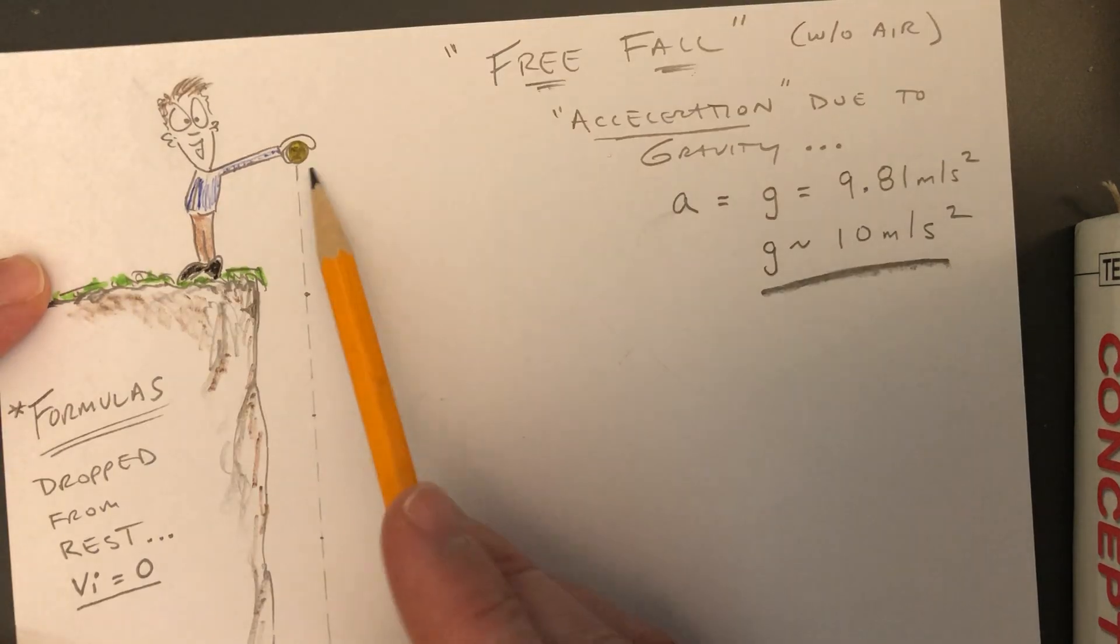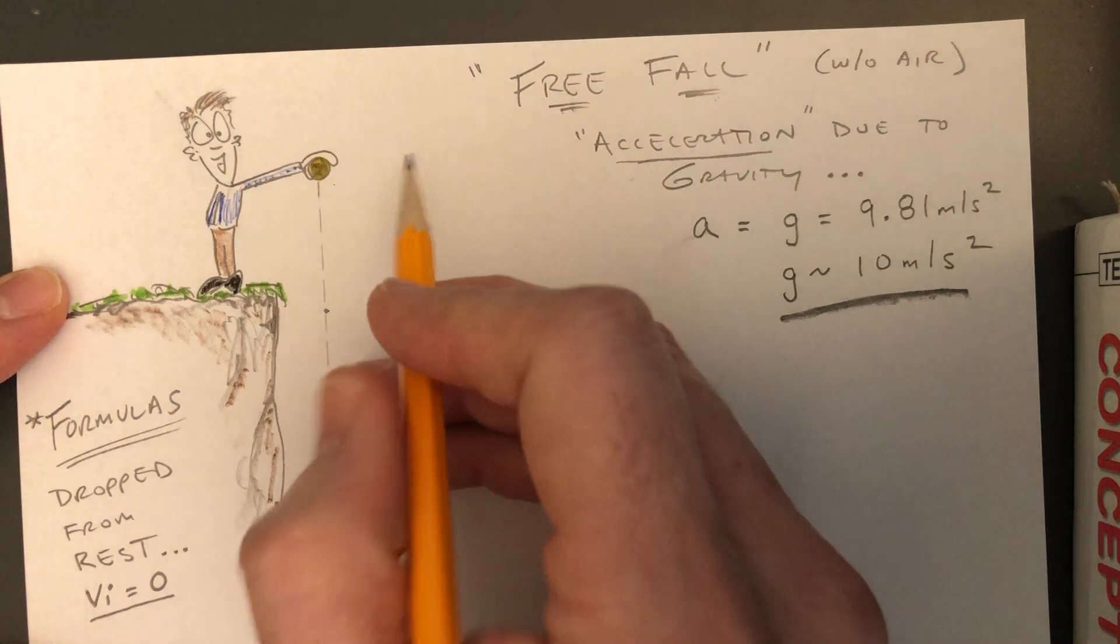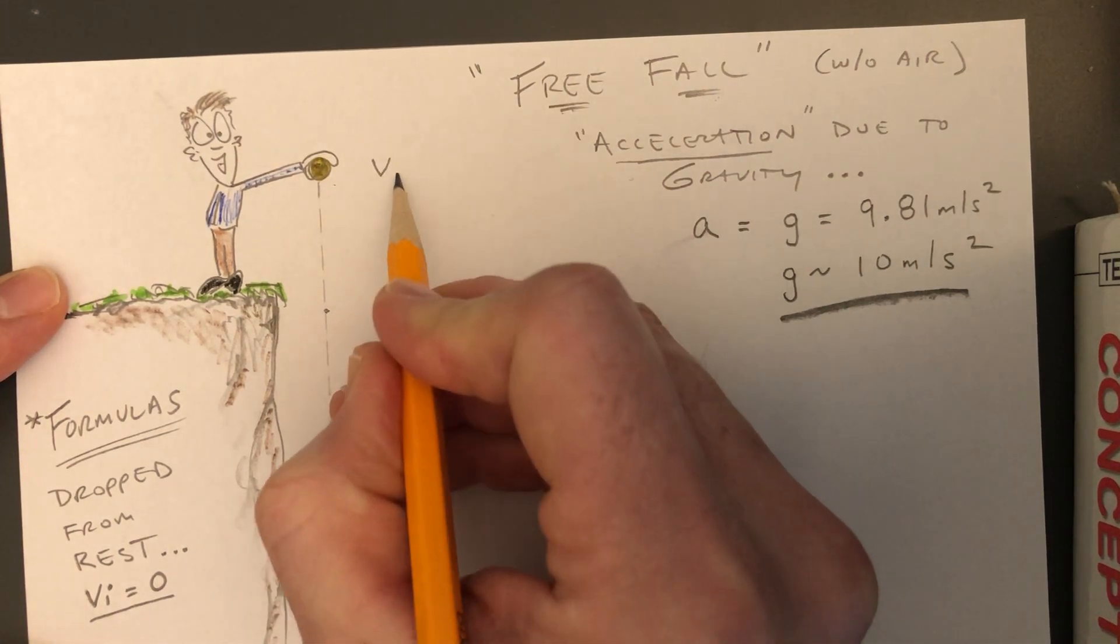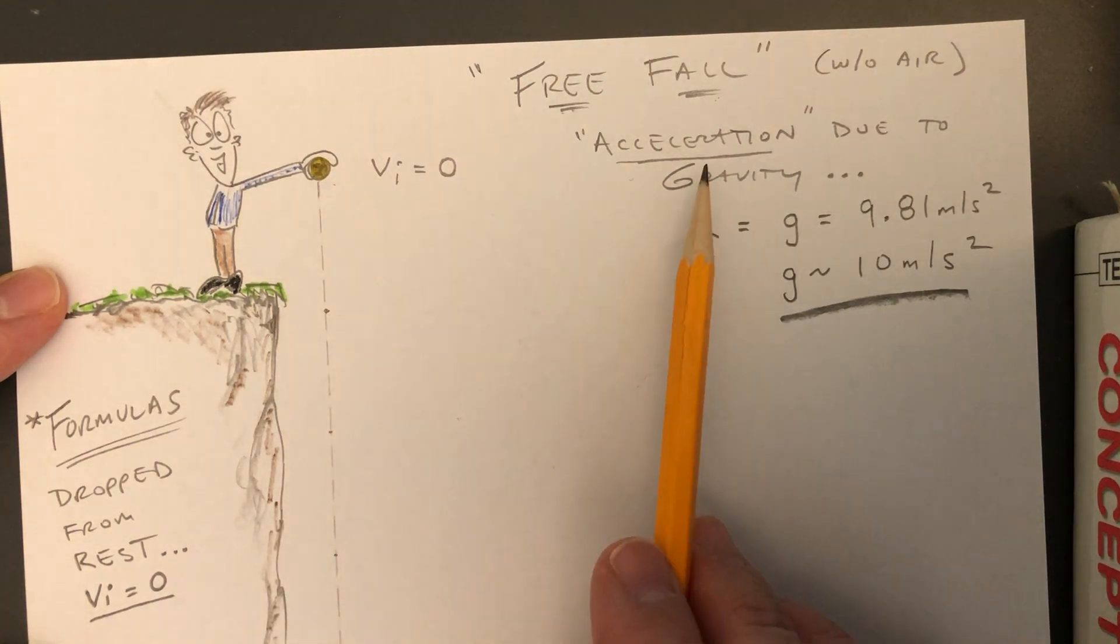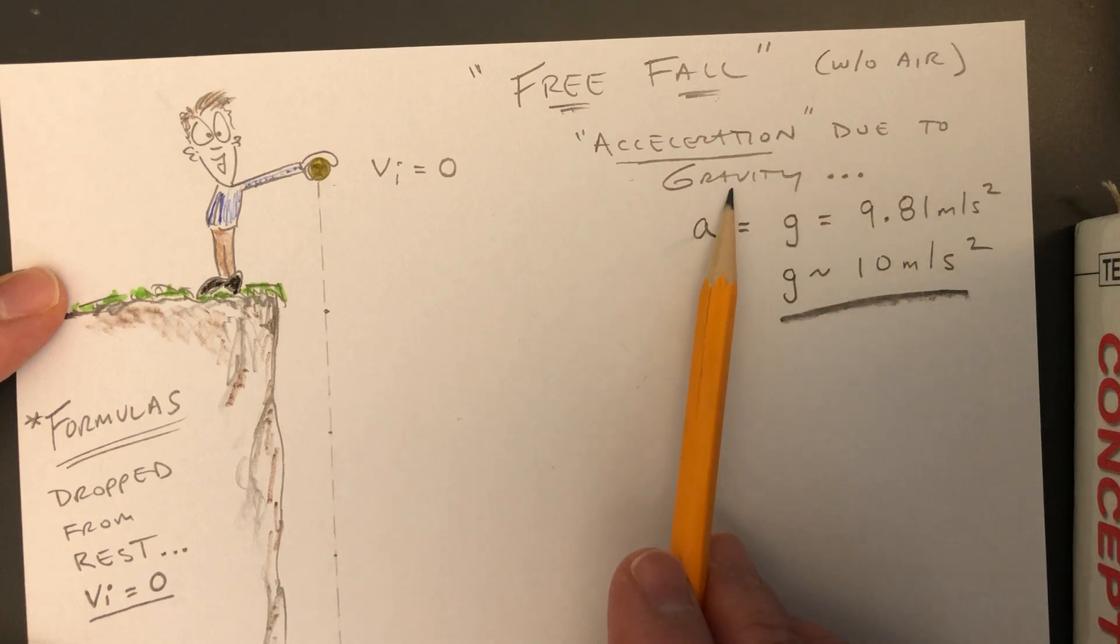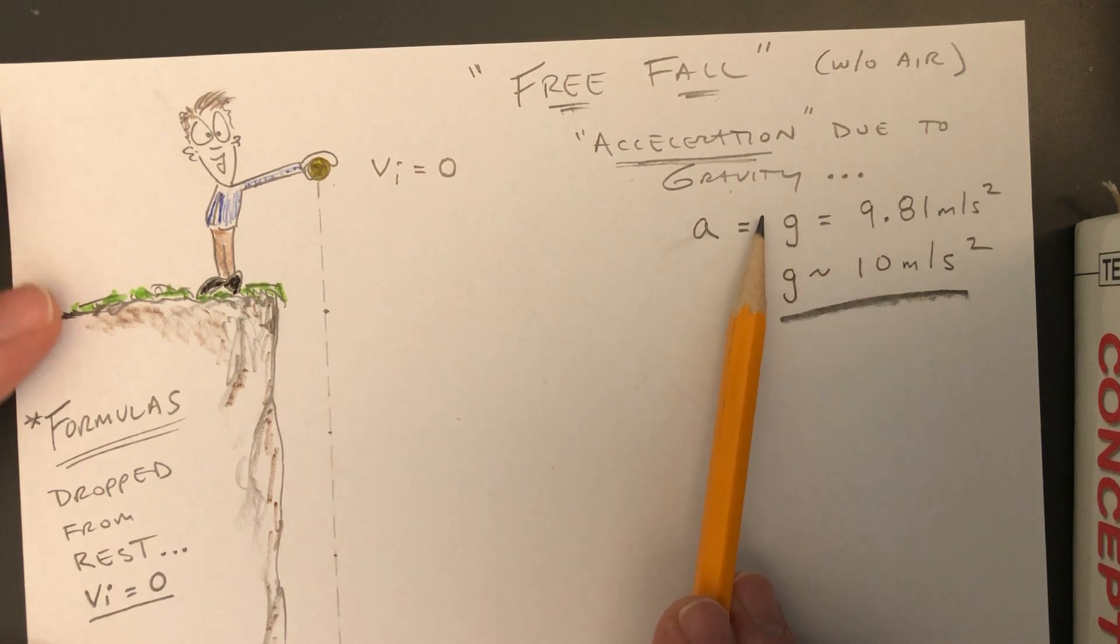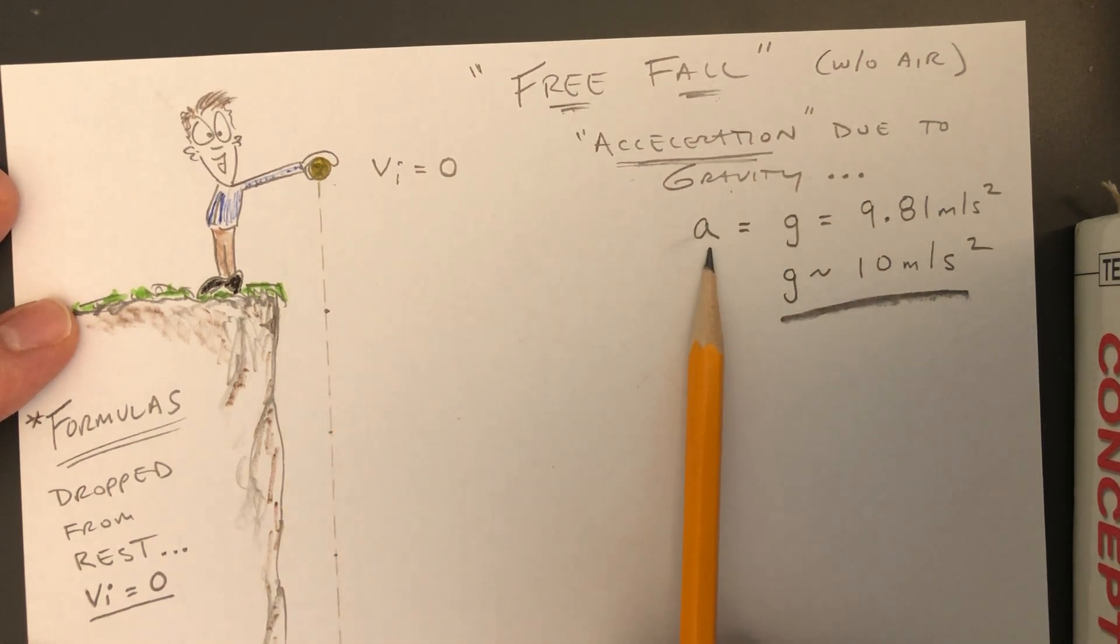If you were to drop any object from rest, so the initial velocity was zero, that this object, due to gravitational pull of the Earth, what we call the acceleration due to gravity, that this object would accelerate. We use the letter g at 9.81 meters per second squared, or meters per second per second. We're going to round that number to make it much easier, to 10 meters per second per second.